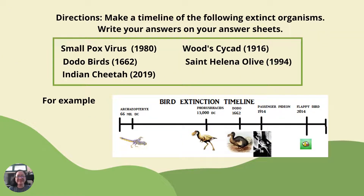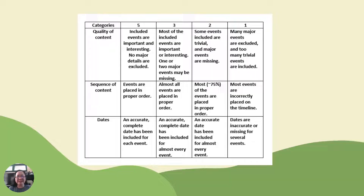Let's create. Directions: Make a timeline of the following extinct organisms. Write your answers on your answer sheet. The organisms are: Smallpox virus (1980), Dodo birds (1662), Indian cheetah (2019), Wood cycad (1960), and St. Helena olive (1994). Here is an example of a timeline. You will be graded using a rubric.